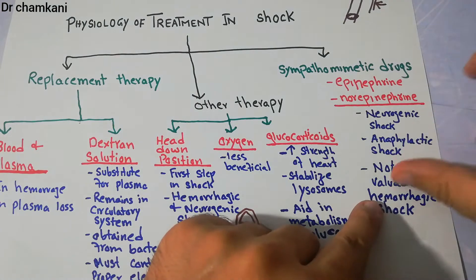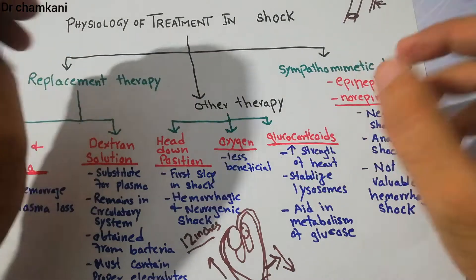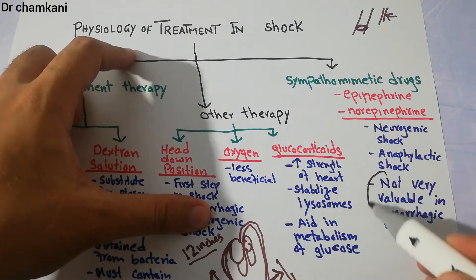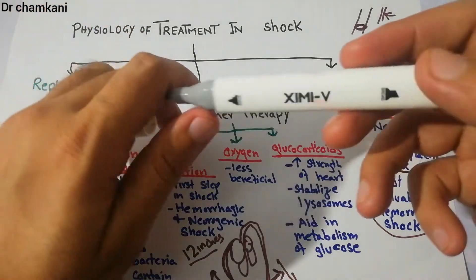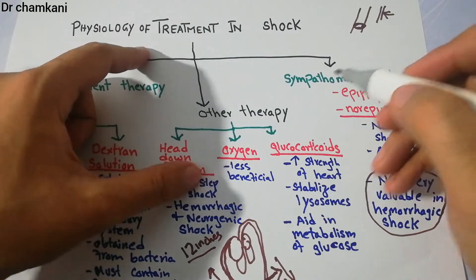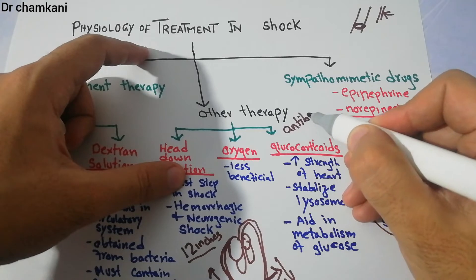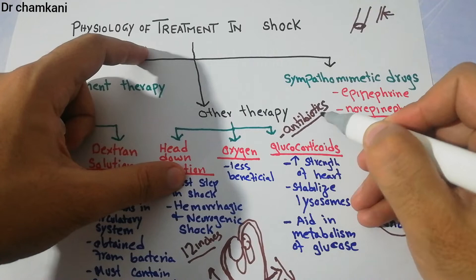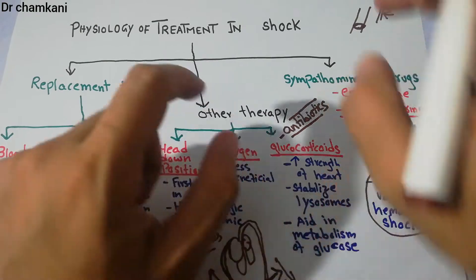Epinephrine and norepinephrine are not very useful in hemorrhagic shock. When blood loss has occurred, there is already so much stimulation of the sympathetic system, so adding sympathomimetic drugs is not very helpful. Antibiotics are another important treatment option, particularly for septic shock, which is basically due to infection — so antibiotics have a role in treating that kind of shock.